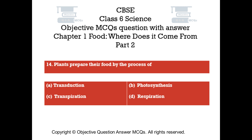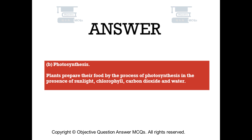Question number 14. Plants prepare their food by the process of: Option A: Transduction. Option B: Photosynthesis. Option C: Transpiration. Option D: Respiration. The right answer is Option B. Plants prepare their food by the process of photosynthesis in the presence of sunlight, chlorophyll, carbon dioxide, and water.